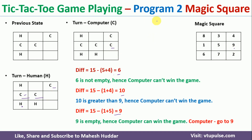This is how program 2 works with the help of the magic square. In the previous video, I discussed how Tic-Tac-Toe is implemented with other approaches. I hope this approach is clear. If you like the video, do like and share with your friends. Press the subscribe button for more videos and the bell icon for regular updates. Thank you for watching.